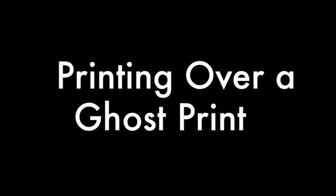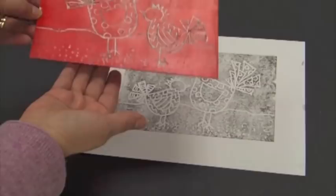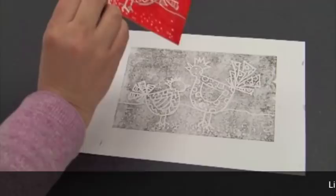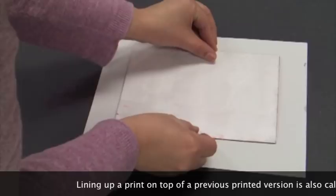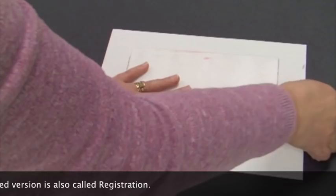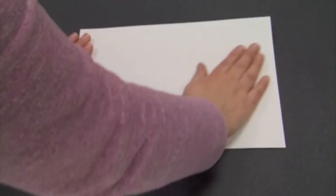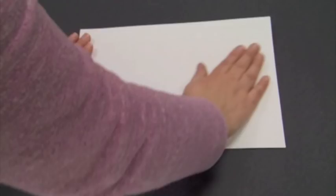Here I have a ghost print, and I'm going to take this inked plate and I'm going to put it on here. Now, I want to make sure that my chickens are going to line up. I'm going to turn it this way and try to line it up. Turn it over. I'm going to rub very carefully. And then I'm going to peel it off, and there we have a print on top of a print.